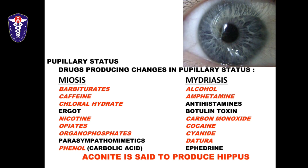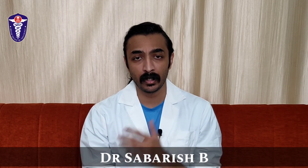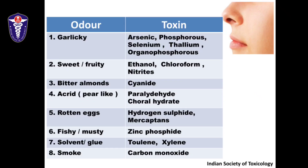A popular exam question is what causes hippus, or dancing pupils — alternating between mydriasis and miosis. The answer is aconite, though it is not something commonly seen in clinical practice. Another common question is based on breath odor: a garlicky odor suggests organophosphorus, thallium, or arsenic; a sweet or fruity odor suggests ethanol or chloroform; a bitter almond odor suggests cyanide poisoning; and a fishy odor suggests zinc phosphate.